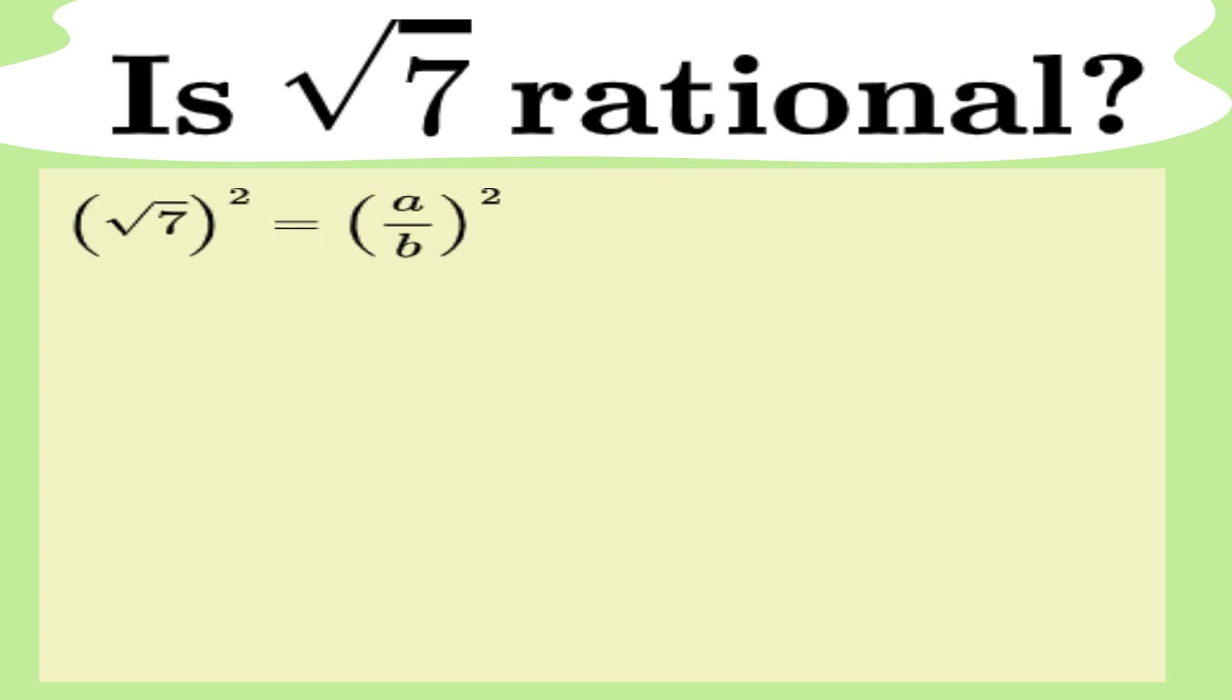Now, to eliminate the square root, we square both sides of the equation. This means we have a squared over b squared equals 7. Then, we multiply both sides by b squared to get rid of the denominator. Now, we're left with a squared equals 7 times b squared.